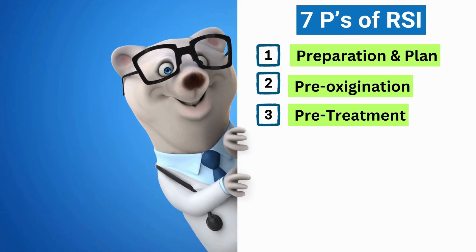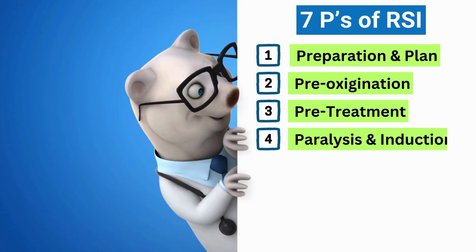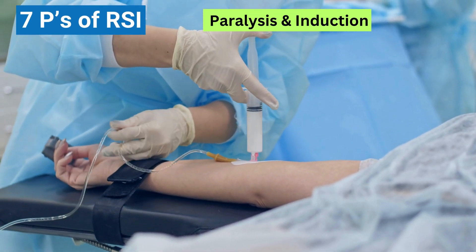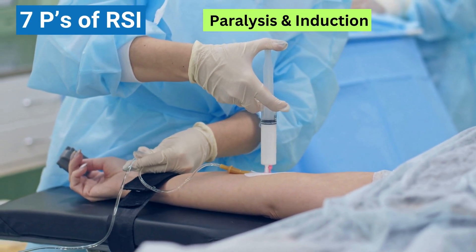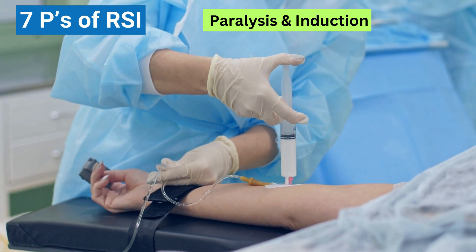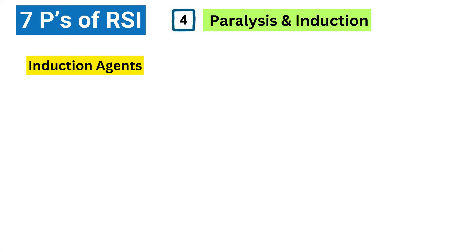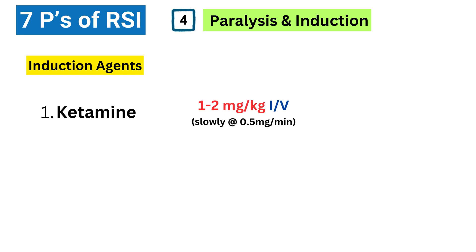Now we get to the core of RSI: paralysis and induction. This is where we give the medications that make the patient unconscious and relax their muscles. We give these medications simultaneously to achieve rapid control of the airway. For induction — to make the patient unconscious — ketamine is often our go-to choice, especially in emergencies. It provides good sedation and pain relief, and it usually doesn't cause a big drop in blood pressure, which is really important if the patient is already unstable.